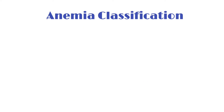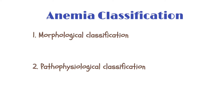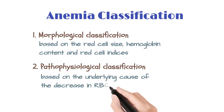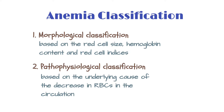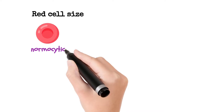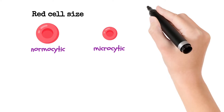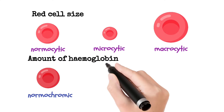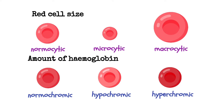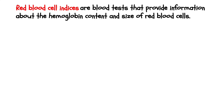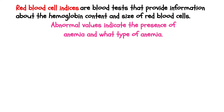There are several ways to classify anemia. Here we will classify anemia based on two systems: morphological classification and pathophysiological classification. Morphological classification is based on red cell size, hemoglobin content, and red cell indices, while pathophysiological classification is based on the underlying cause of the decrease in RBCs in circulation. Red cells are grouped into three based on their sizes: normocytic (normal size), microcytic (smaller), and macrocytic (larger). Similarly, depending on hemoglobin content, they are grouped as normochromic, hypochromic, and hyperchromic. Red blood cell indices are blood test parameters that provide information about hemoglobin content and size of red blood cells, and abnormal values indicate the presence and type of anemia.